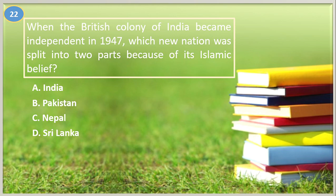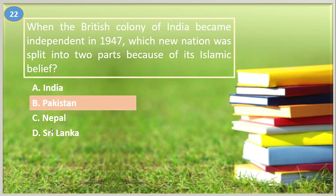Number twenty-two. When the British colony of India became independent in 1947, which new nation was split into two parts because of its Islamic belief? A. India, B. Pakistan, C. Nepal, D. Sri Lanka. The answer is letter B, Pakistan. Pakistan was split into West Pakistan, which is now Pakistan, and East Pakistan, which is now Bangladesh.